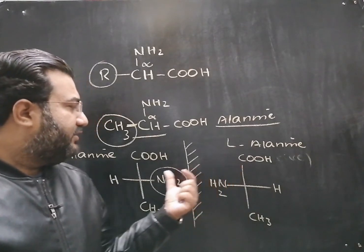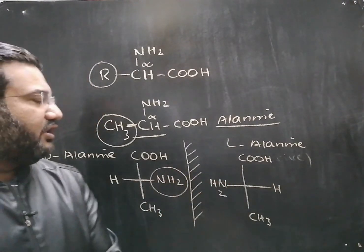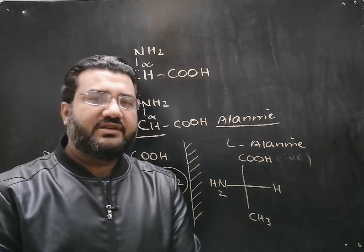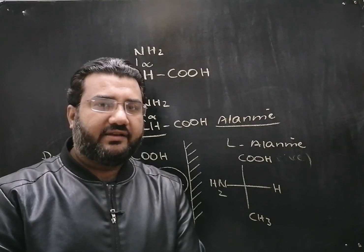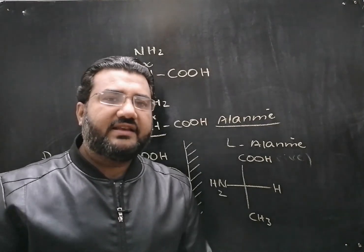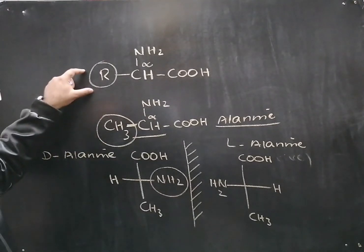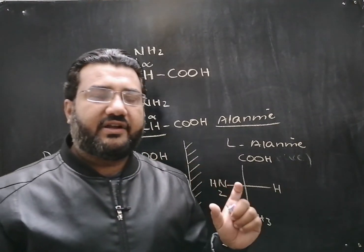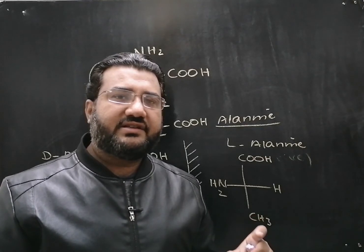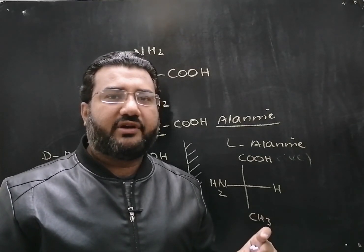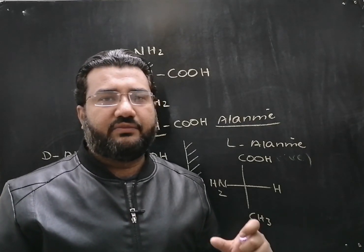In the same way, when we keep changing the R group, 20 different amino acids are produced. These 20 amino acids are very important because they are the building blocks of proteins.